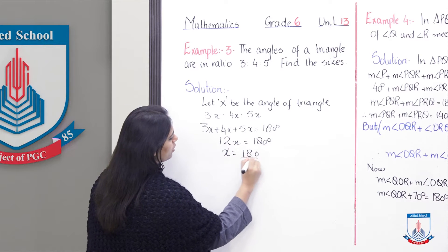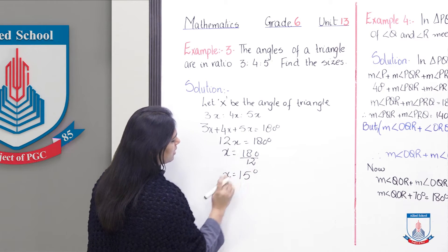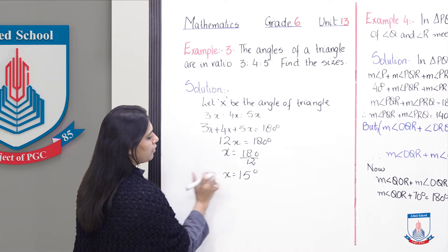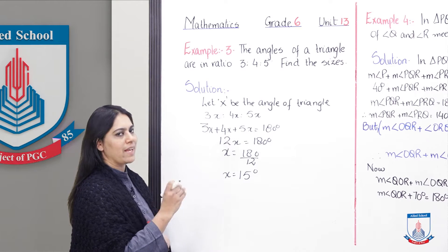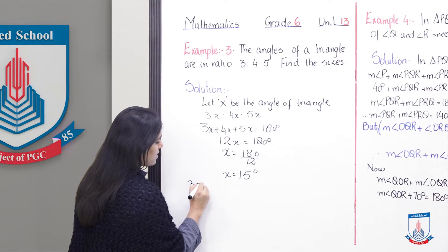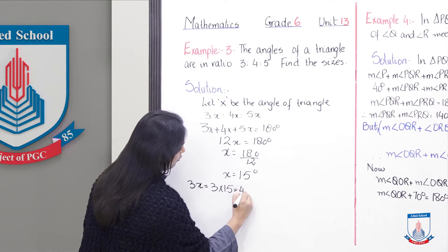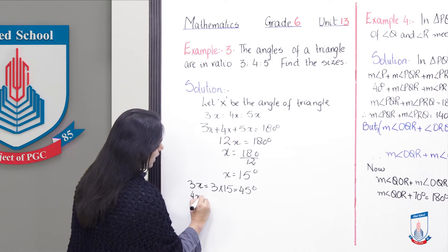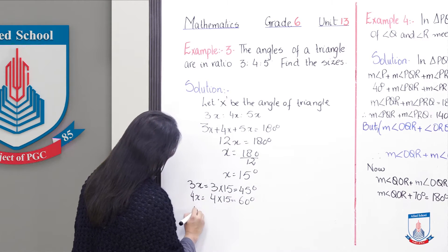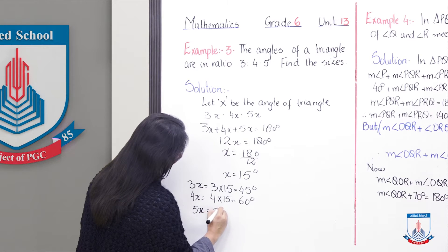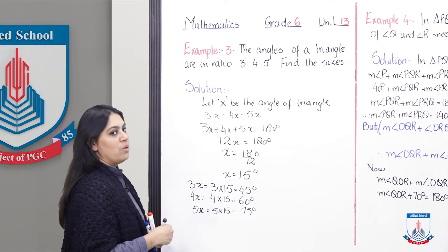We divide 180 degrees by 12 and get x = 15 degrees. Now we put the value of x into each expression to find all interior angles. So 3x = 3 × 15 = 45 degrees. 4x = 4 × 15 = 60 degrees. 5x = 5 × 15 = 75 degrees.